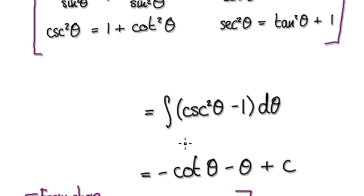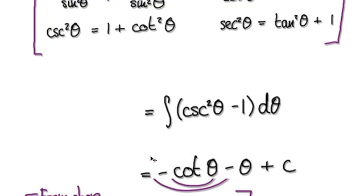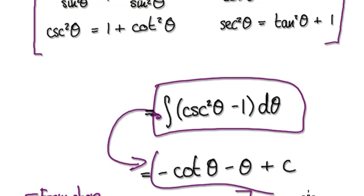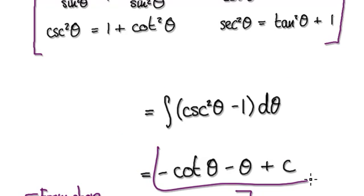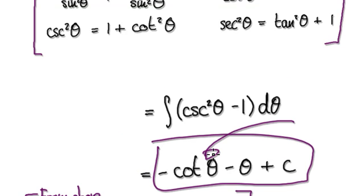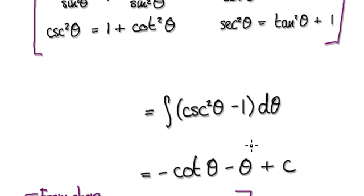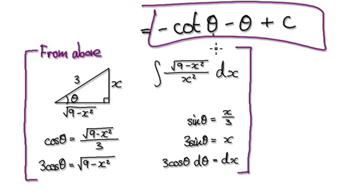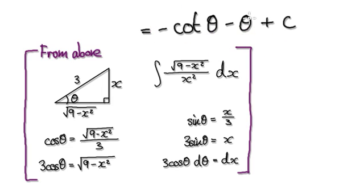Now integrate this. From the previous video, we've seen that integrating this gives this result. So this is our answer — but we don't want the answer in terms of θ. We want it in terms of x, so we need to translate it back.